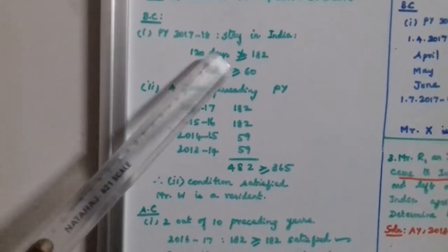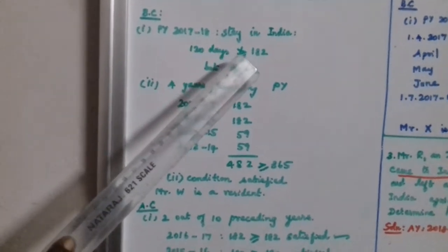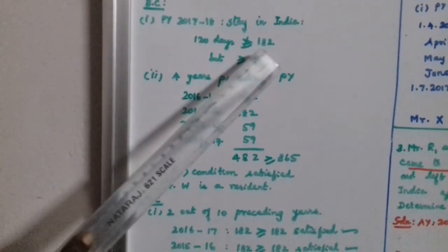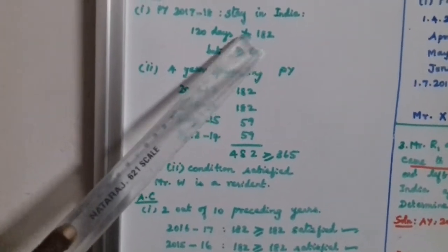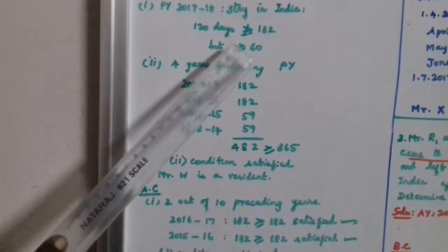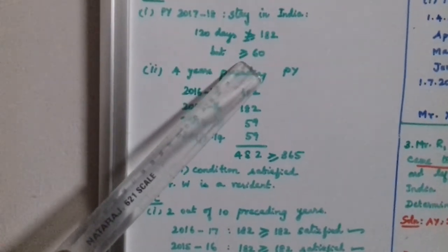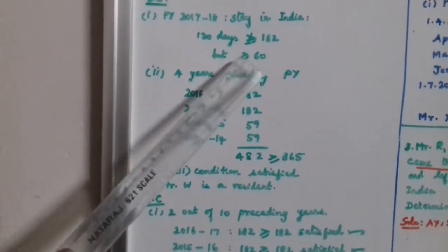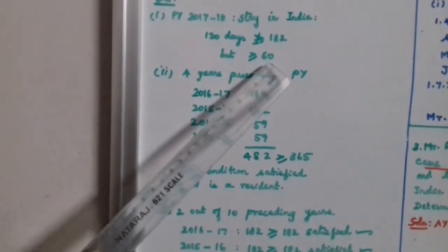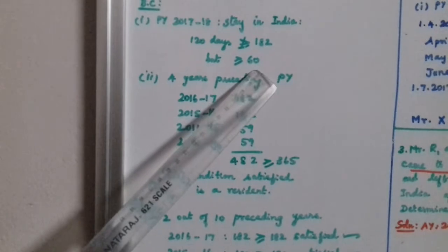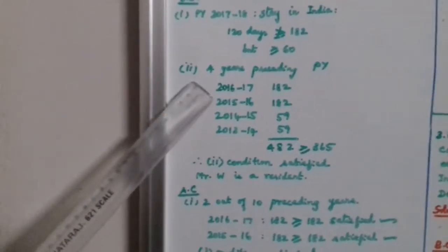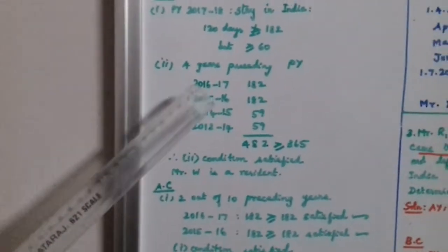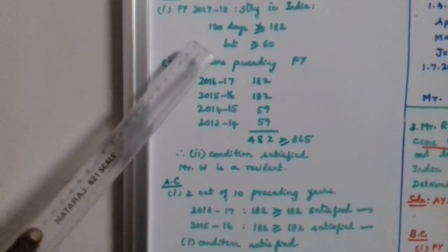120 days — is it greater than or equal to 182? No. Then check: is it greater than or equal to 60? Yes, it is greater than or equal to 60. Then proceed to the second condition. So the first condition — 182 days — is not satisfied.